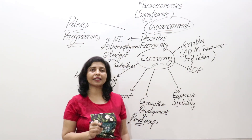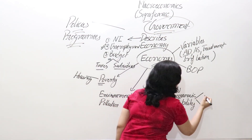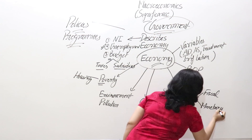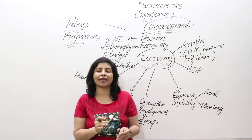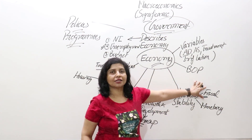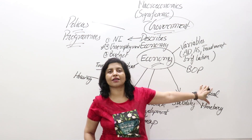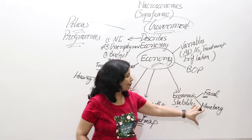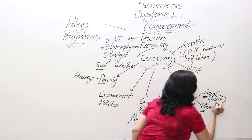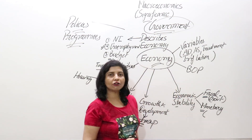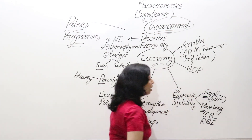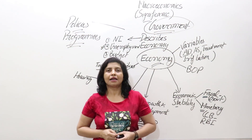Economic stability is attained with the help of fiscal and monetary policy. There should be no fluctuations in the economy like inflation, deflation, and business cycles. To avoid that, the government pursues fiscal policy — that is, budgetary policy — taken care of by the finance ministry, and monetary policy, which is laid down by the central bank, which is the RBI in India.